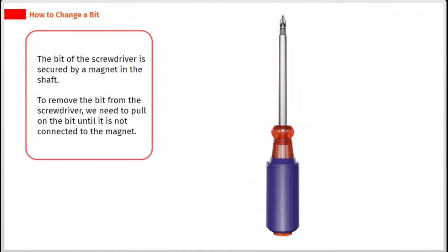The bit of the screwdriver is secured by a magnet in the shaft. To remove the bit from the screwdriver, we need to pull on the bit until it is not connected to the magnet.